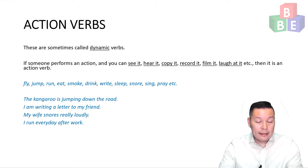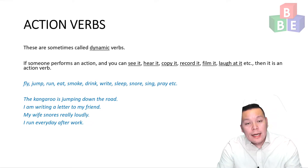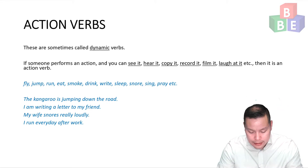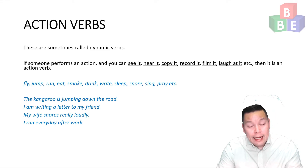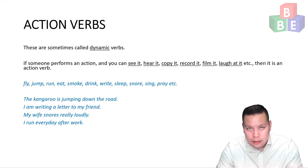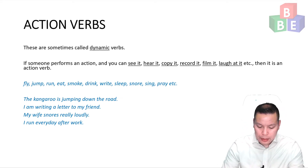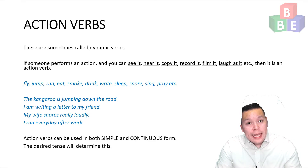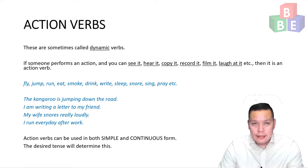Here are some example sentences: The kangaroo is jumping down the road. I am writing a letter to my friend. My wife snores really loudly. I run every day after work. All of these verbs are action verbs. Action verbs can be used in both the simple and continuous form — the desired tense will determine this.